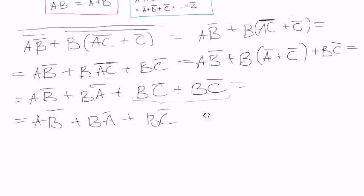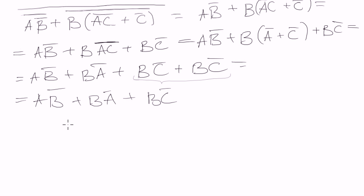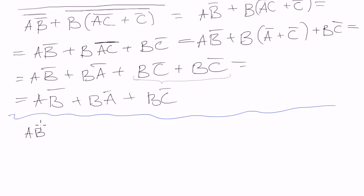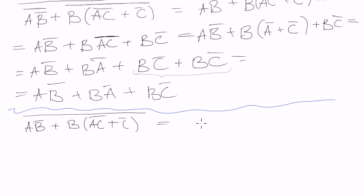Now let's do the same example but without this negation and without this one - it will get harder. So: A·B·C negated, plus B·C negated, plus B·C negated, and then we negate everything. Then again we start with rewriting: A·C negated and B negated, plus we open the brackets.